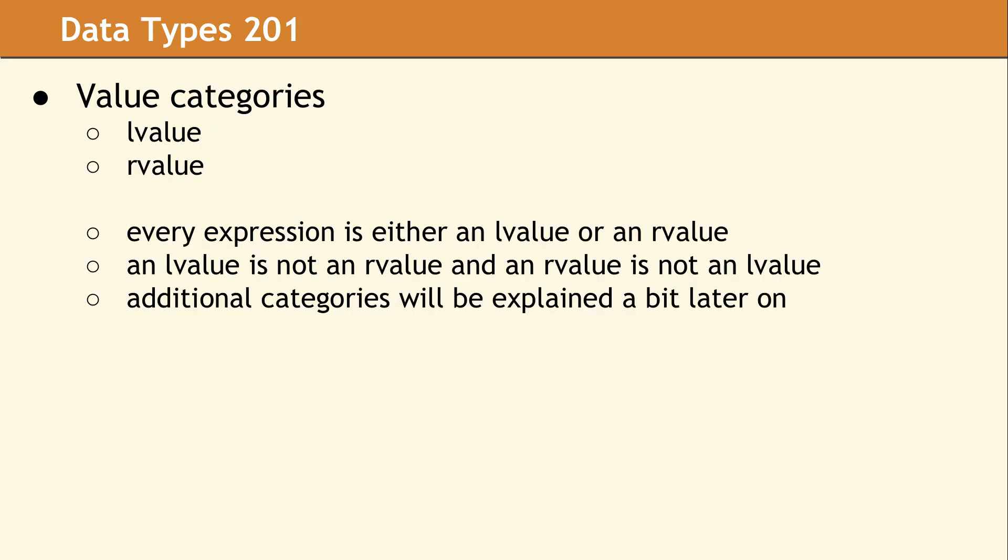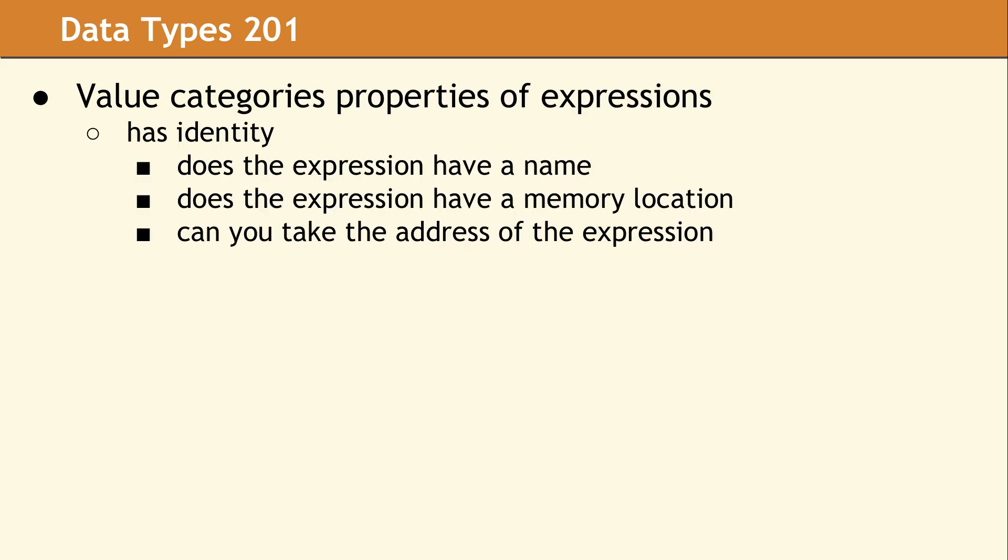A value category is the second property which makes up an expression. There are two basic value categories, an L value and an R value. Every single expression is either an L value or an R value. In order to determine the value category of an expression, we need to ask a couple questions. Does the expression have a name? Does it have a memory location? And can you take the address of the expression?